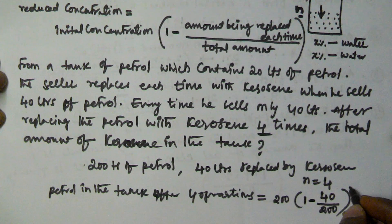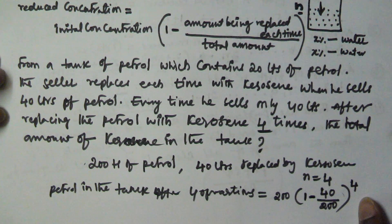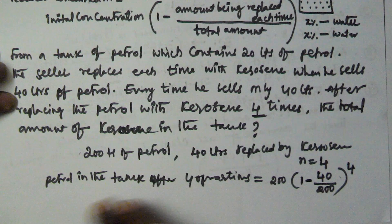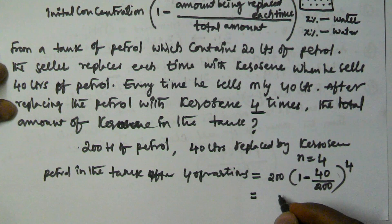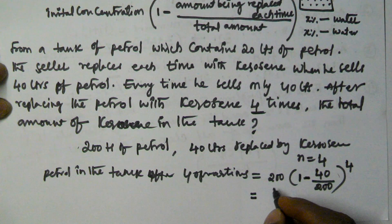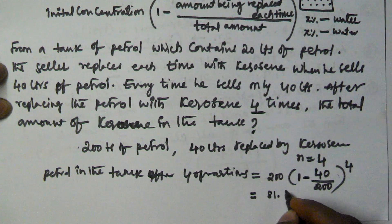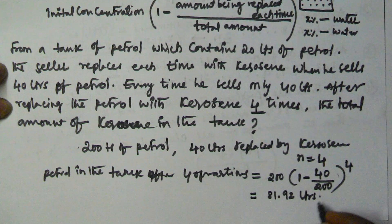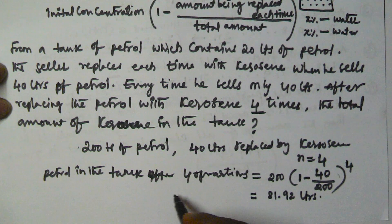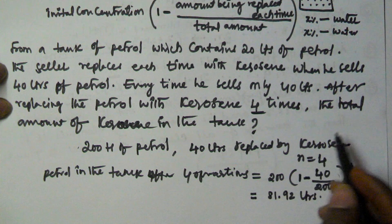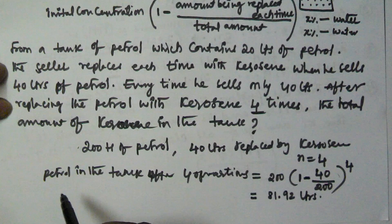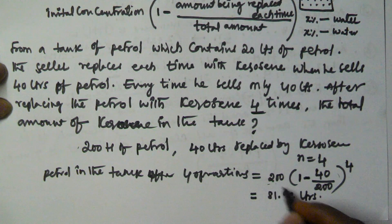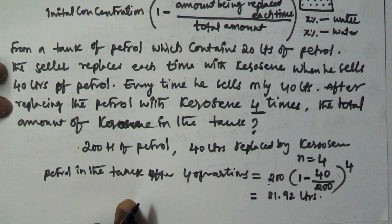So the formula gives us: 200 multiplied by (1 minus 40/200) to the power of 4. When we solve this equation we get 81.92 liters. So 81.92 liters is the petrol remaining in the tank after 4 operations. But the question asks for the amount of kerosene in the tank, so the total amount is 200 and in that we have 81.92 liters of petrol.